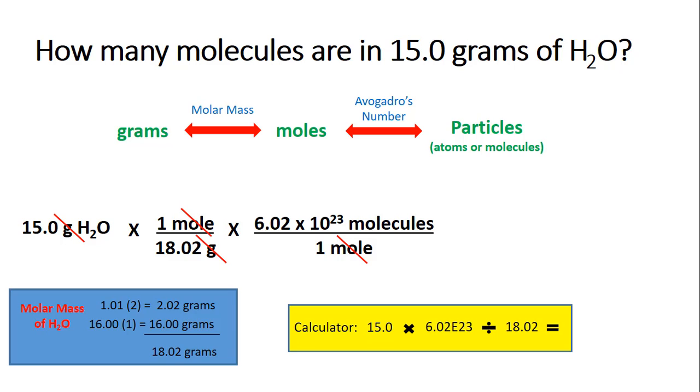Remember, when you put Avogadro's number in your calculator, it's important that you're putting 6.02. Usually we use the second function e button for times 10 to the 23rd power. We then are dividing by what we've got in the denominator, which is 18.02. When you do that, you should get your final answer, which is 5.01 times 10 to the 23rd molecules.